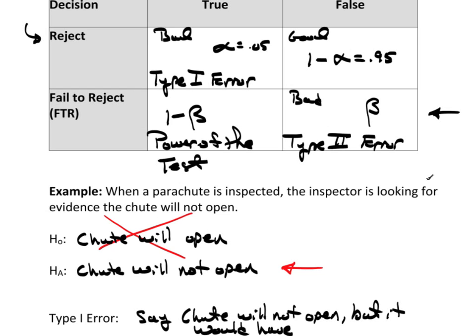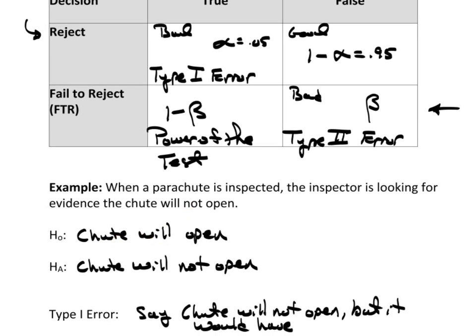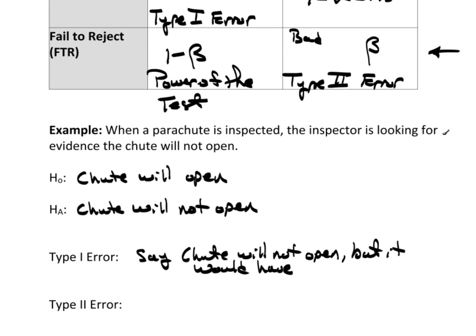Okay, so, what is a type 2 error? Here, the type 2 error will be failing to reject the null hypothesis when it's actually false. So, here a type 2 error would be, you say the chute will open, but it will not.